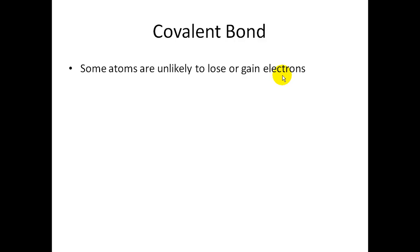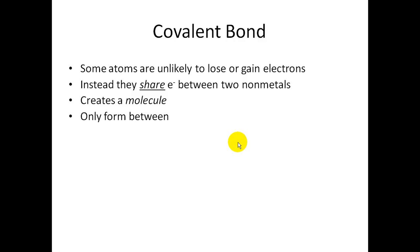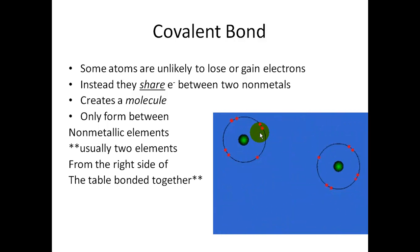The other one was the covalent bond that I showed you earlier. Some atoms are unlikely to lose or gain electrons, and they will share electrons. This happens between two non-metals. When that happens, the product would be a molecule. Covalent bonds only form between non-metallic elements, which are on the right side of the table, bonded together. And there's an example. These two would come together and share that electron, and then they both would be stable. That is a covalent bond.